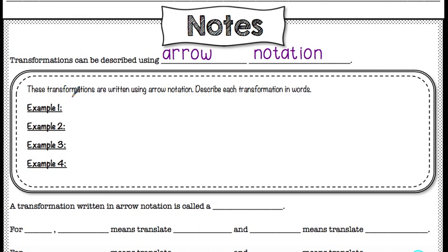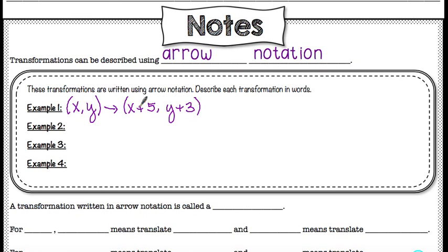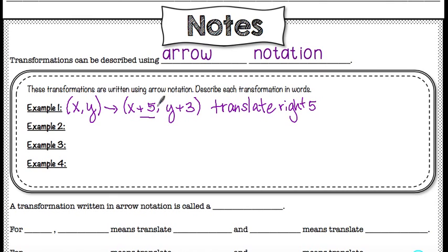For example, one: I have x comma y with an arrow, x plus five, y plus three. This is a translation — if I see plus or minus signs in both positions, that means you're dealing with a translation. X plus means to the right, so this means translate right five. Y plus means up, so right five and up three.